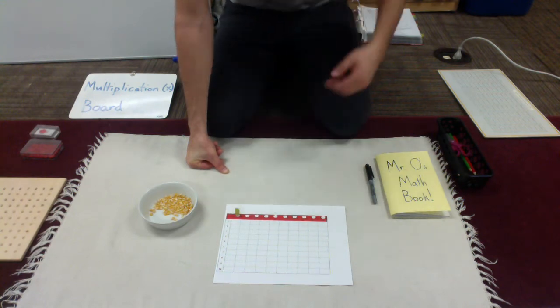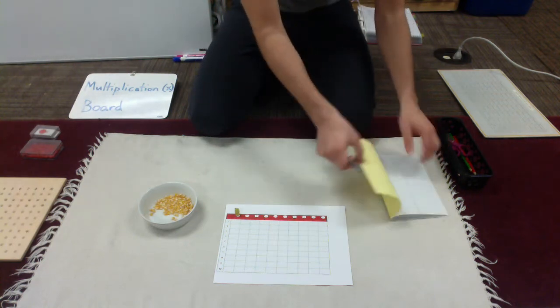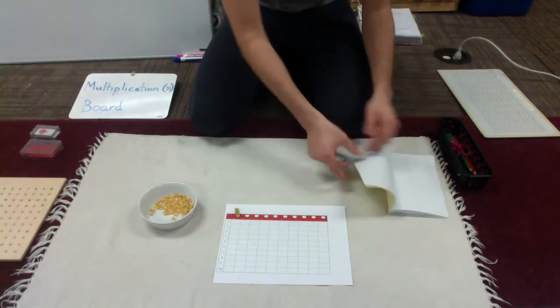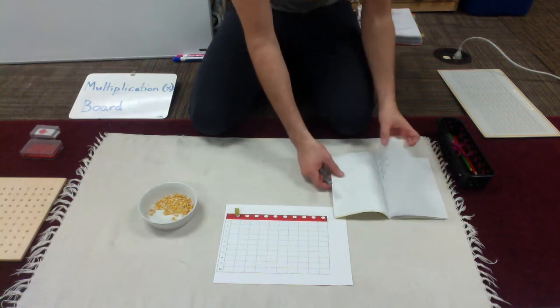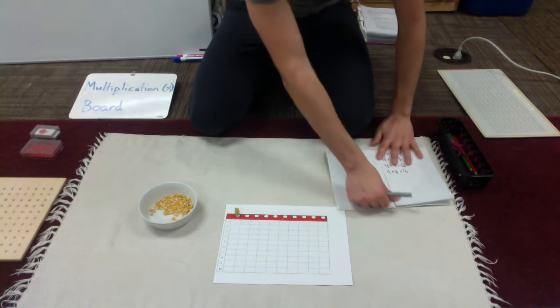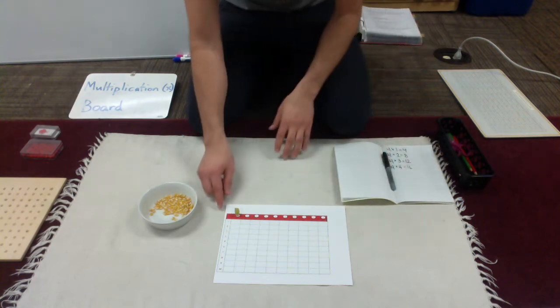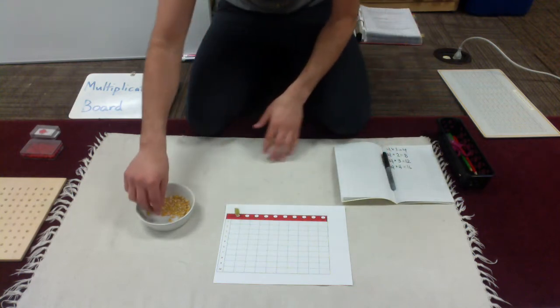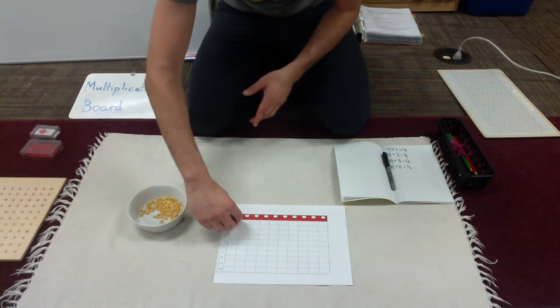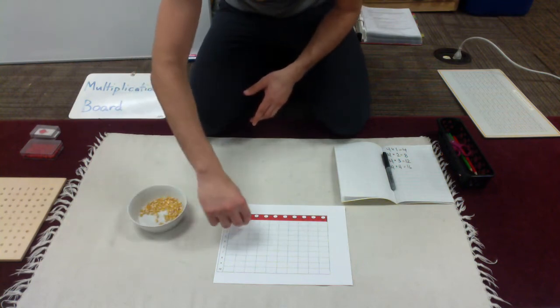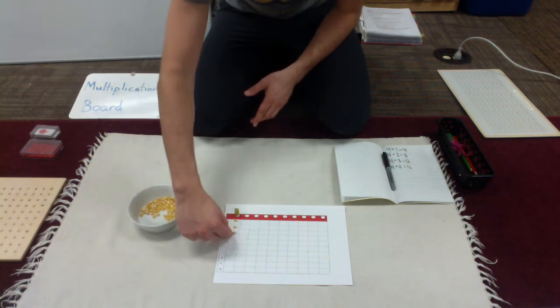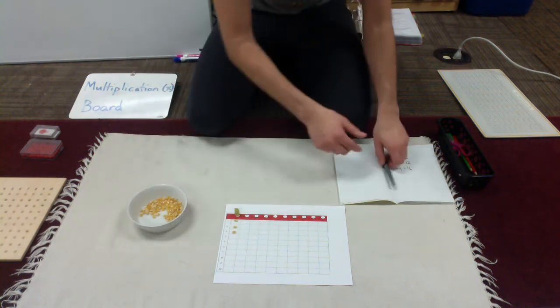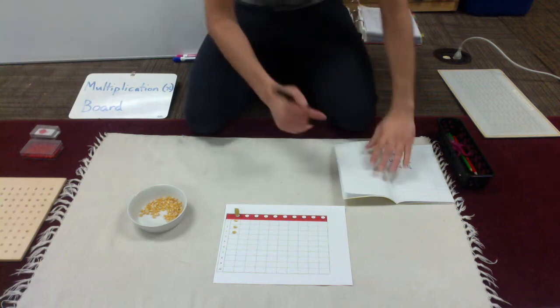And for this one, I'm going to do the multiplicand of three. So again, I'll open my math booklet to the next blank page, and I will begin with three times one. One, two, three. Three times one is three. See it, say it, write it.